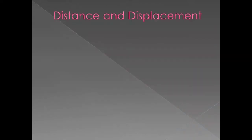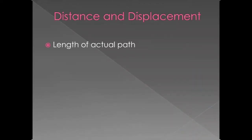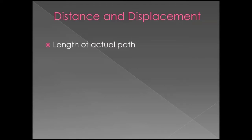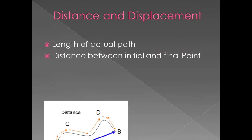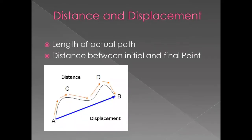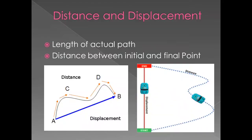Distance and displacement. The length of actual path covered by a moving body is called distance, while the distance between the initial and final position of a moving body is called its displacement.